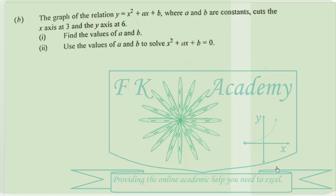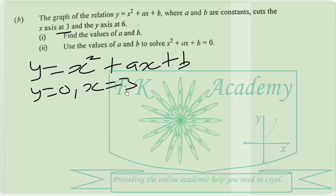We have y equals x squared plus ax plus b. When it cuts the x-axis, y equals zero and x equals 3. That will give us zero equals 3 squared plus a times 3 plus b.